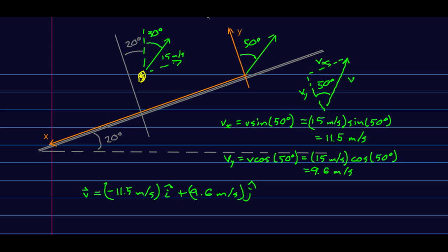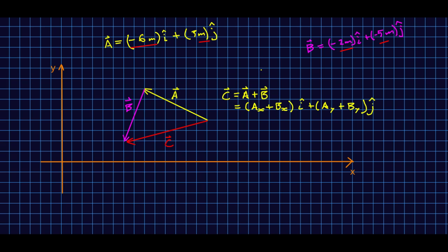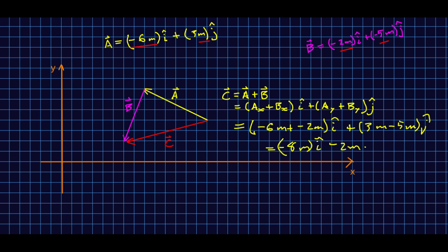The real advantage of component form is that it makes vector addition really easy. Here's vector a and vector b — I've drawn the vector addition. You just collect the î's and the ĵ's: add the x-components to get negative six meters plus negative two meters î, and add the y-components to get three meters minus five meters ĵ, giving the result: negative eight meters î minus two meters ĵ.